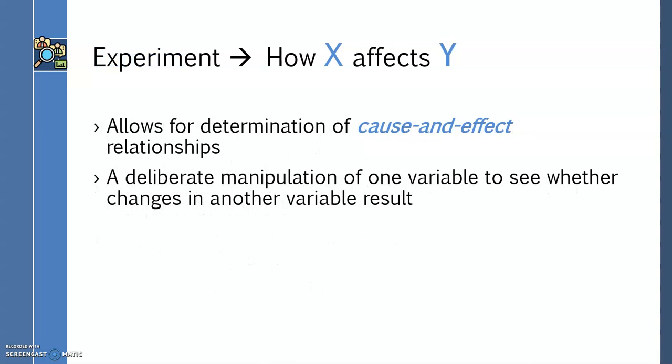In simple terms, the main objective of an experiment is to see how one variable called X affects another variable called Y. In general, it is important to understand that experiments allow for the determination of cause and effect relationships, which is something that other descriptive methods don't allow.